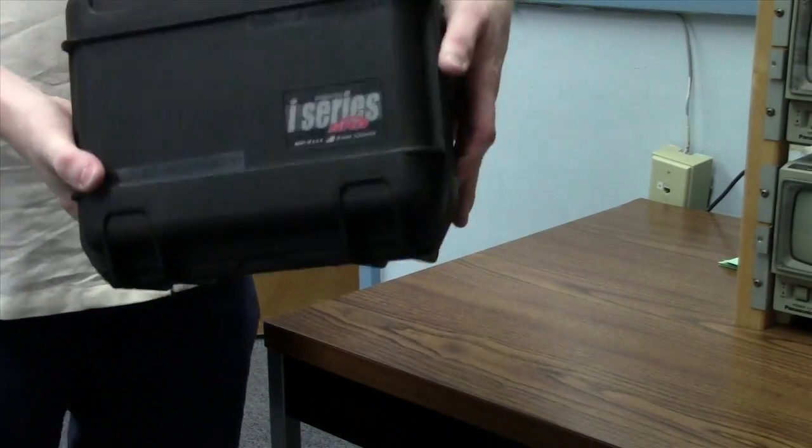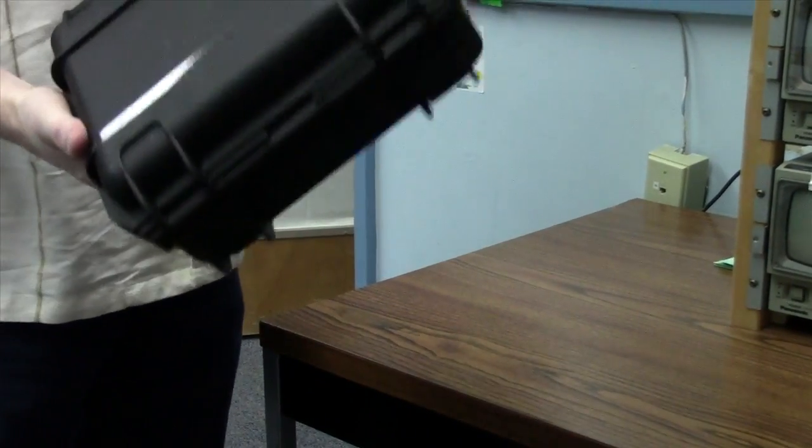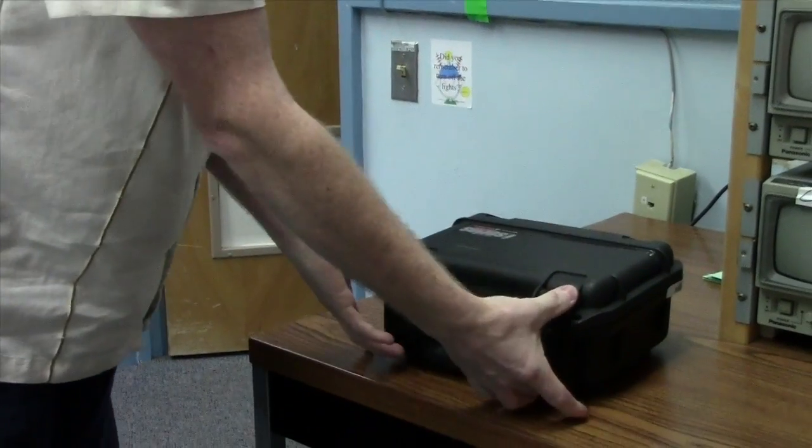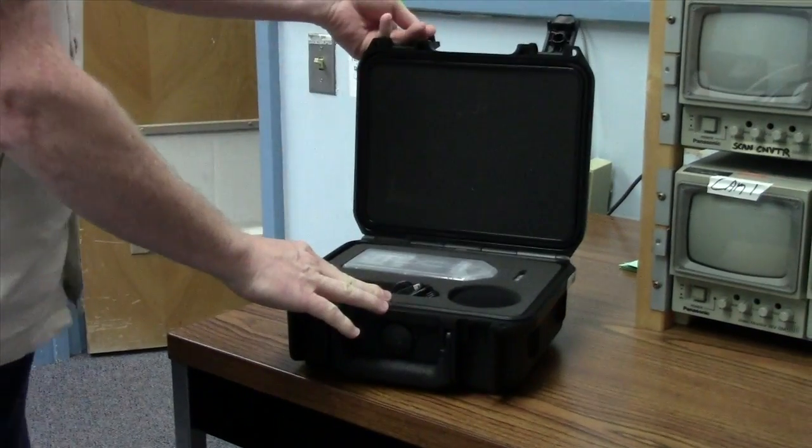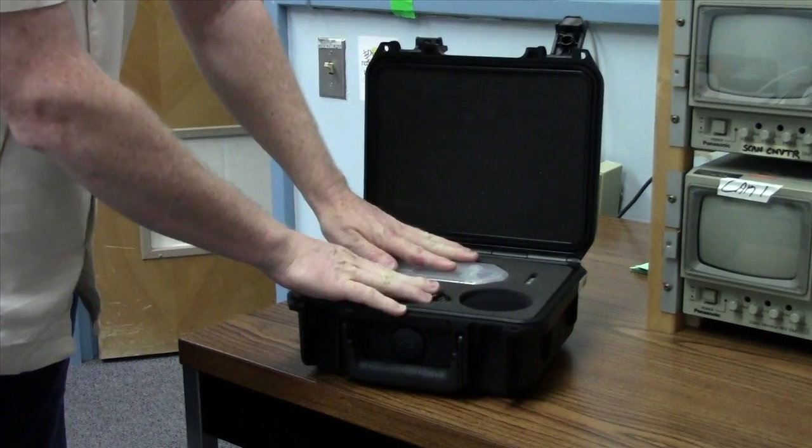So this is the H4N audio recorder and it comes in a box like this. You just get it from the TA. When you open it up, you pop open the two latches in the front and it's going to have different components in it.